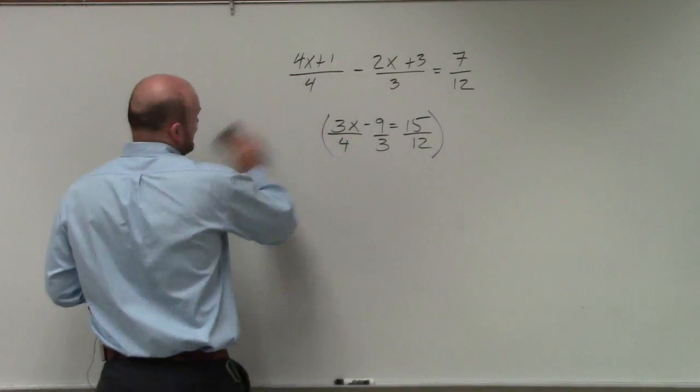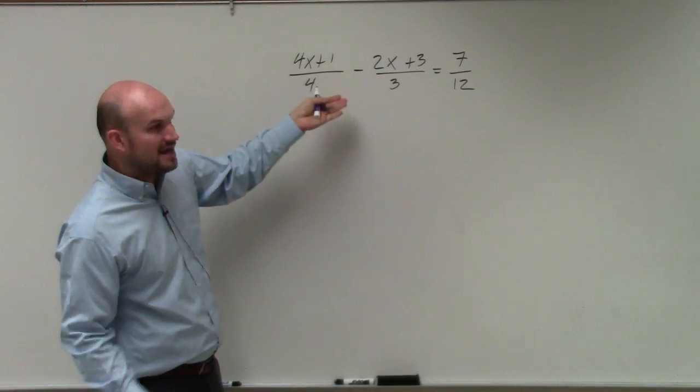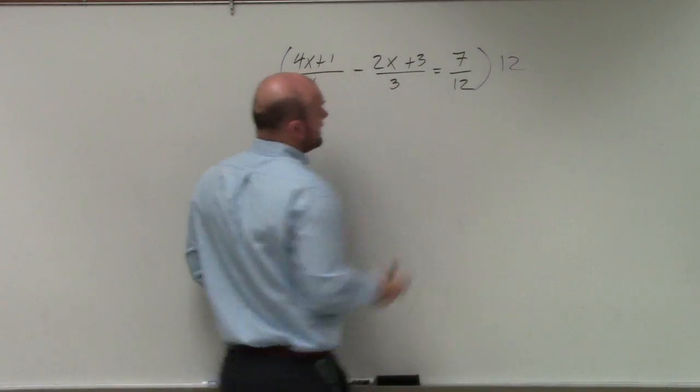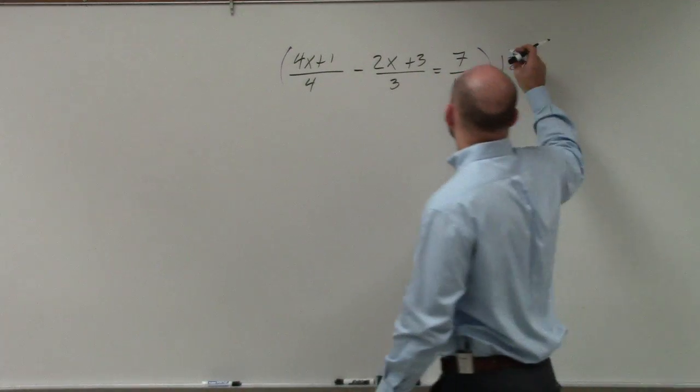So that's the basic idea, and that's exactly what we have here, is we have a whole bunch of fractions, whereas if we multiply it by 12, and again, this is an equation, so we want to produce an equivalent equation, and we need to multiply everything by 12.